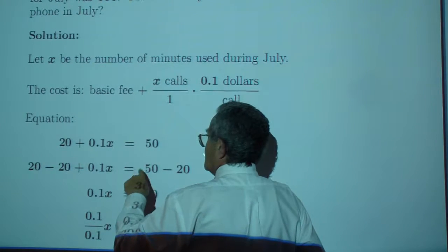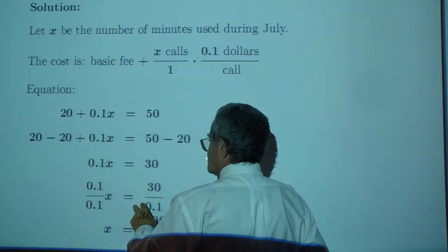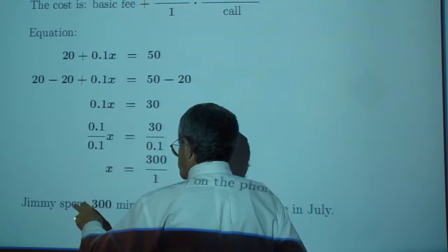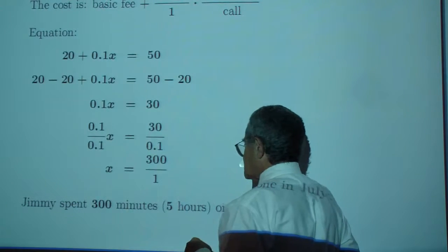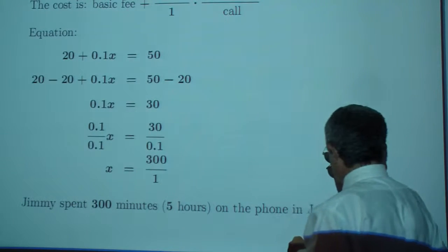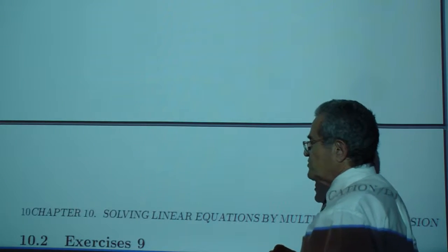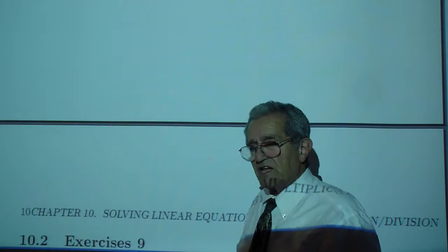So we'll subtract 20 from both sides. Divide by 0.01 and 300 over 1 is 300. So Jimmy spent 300 minutes, that means 5 hours on the phone, in July. Would you say that Jimmy is a teenager?